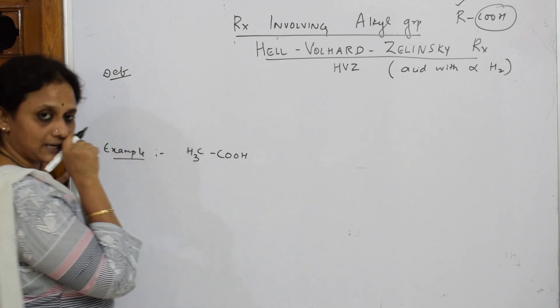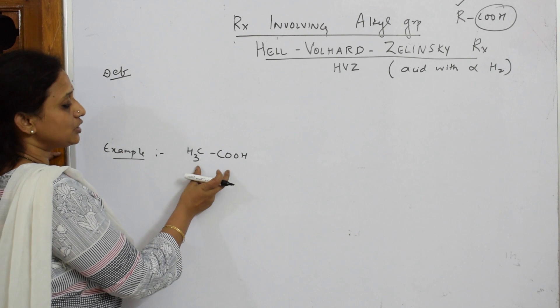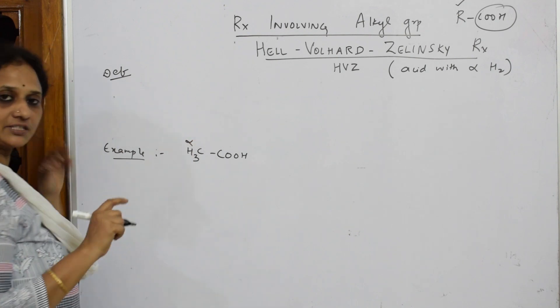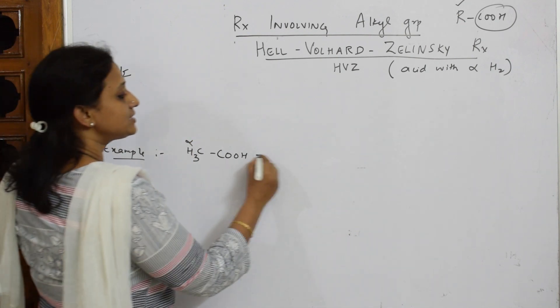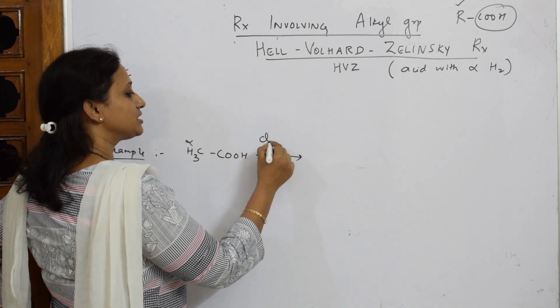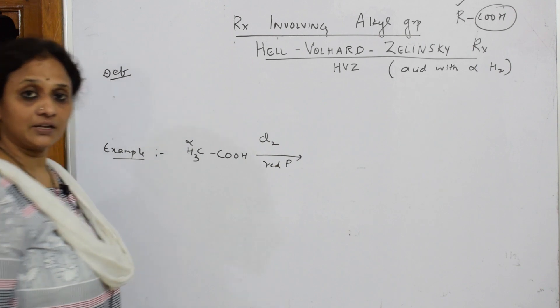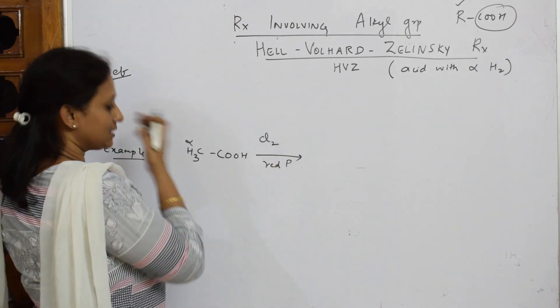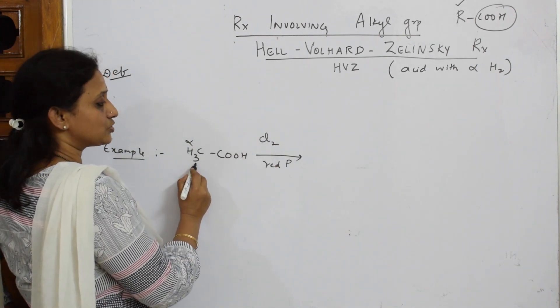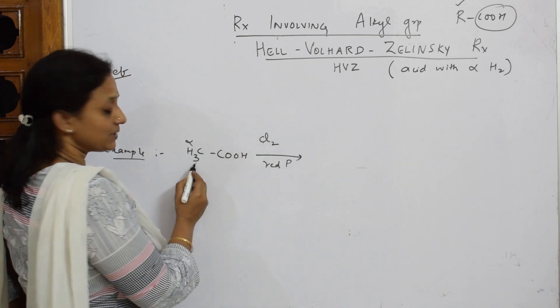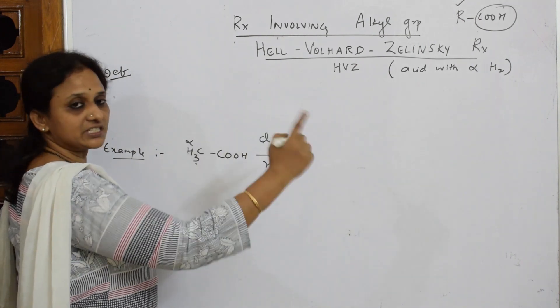A carboxylic acid group - this is your alpha hydrogen, right adjacent to your functional group. This is alpha hydrogen, this is alpha carbon. Now what happens when you have your acids with alpha hydrogen? When these are treated with red phosphorus, I'm treating this with chlorine and red phosphorus.